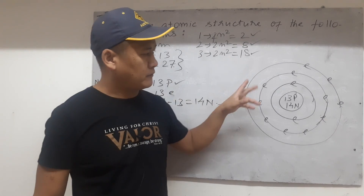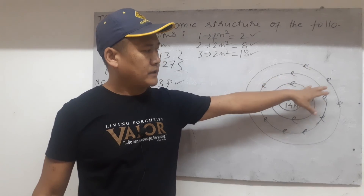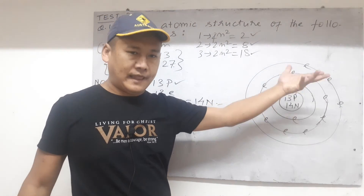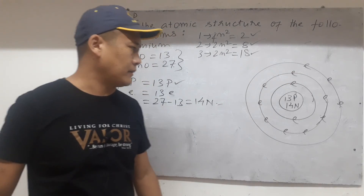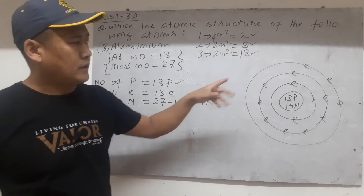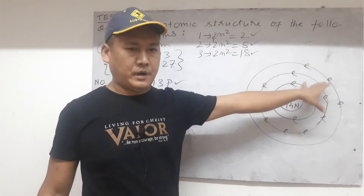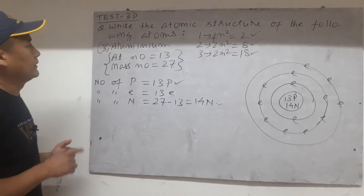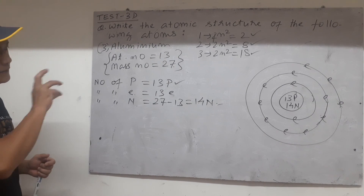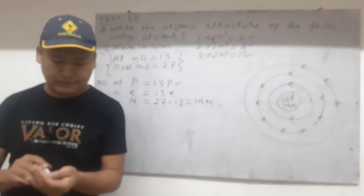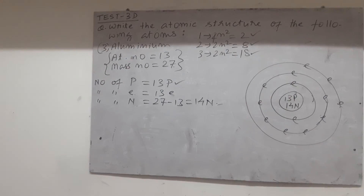Please remember this definition that we learned today: the electrons present in the outermost shell or orbit of an atom are called valence electrons. This is important because valence electrons are the only electrons that take part in a chemical reaction. That concludes this class portion — we'll continue the next part in the next class.